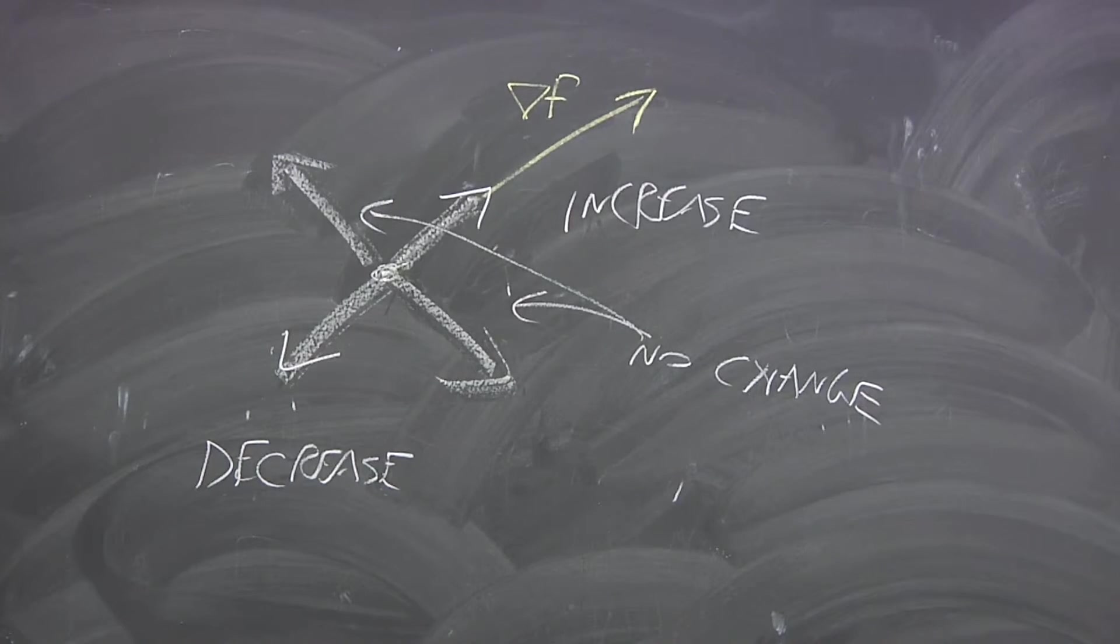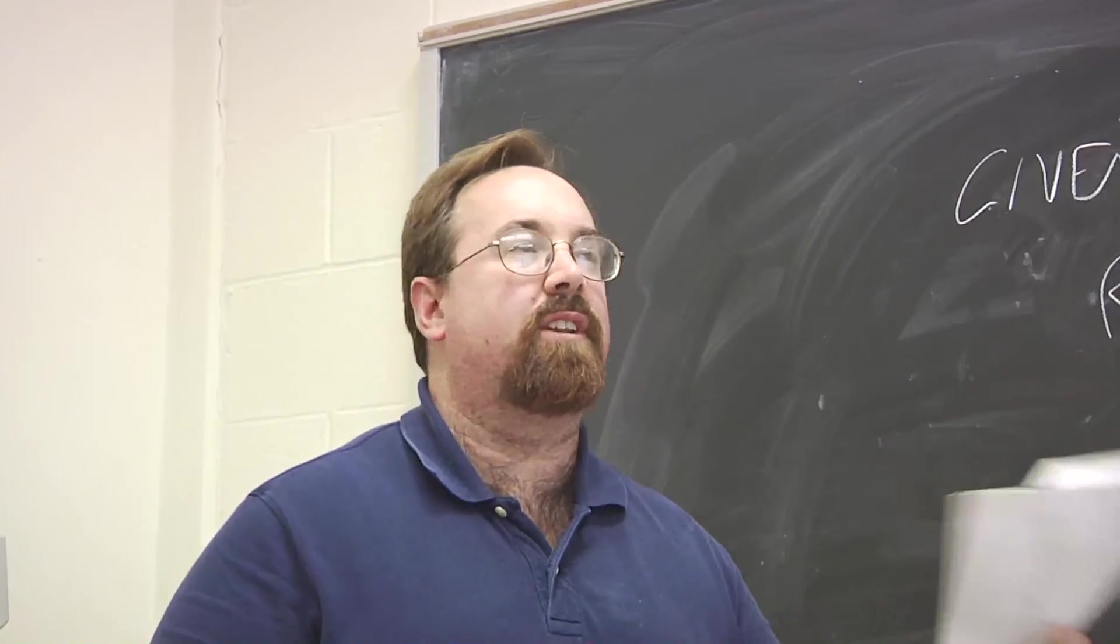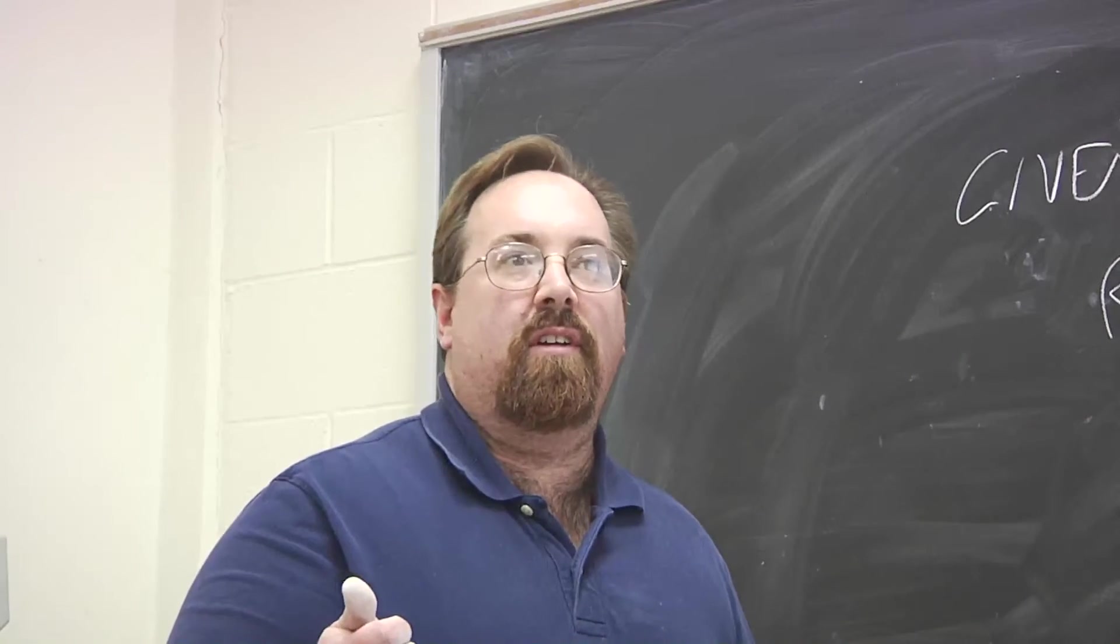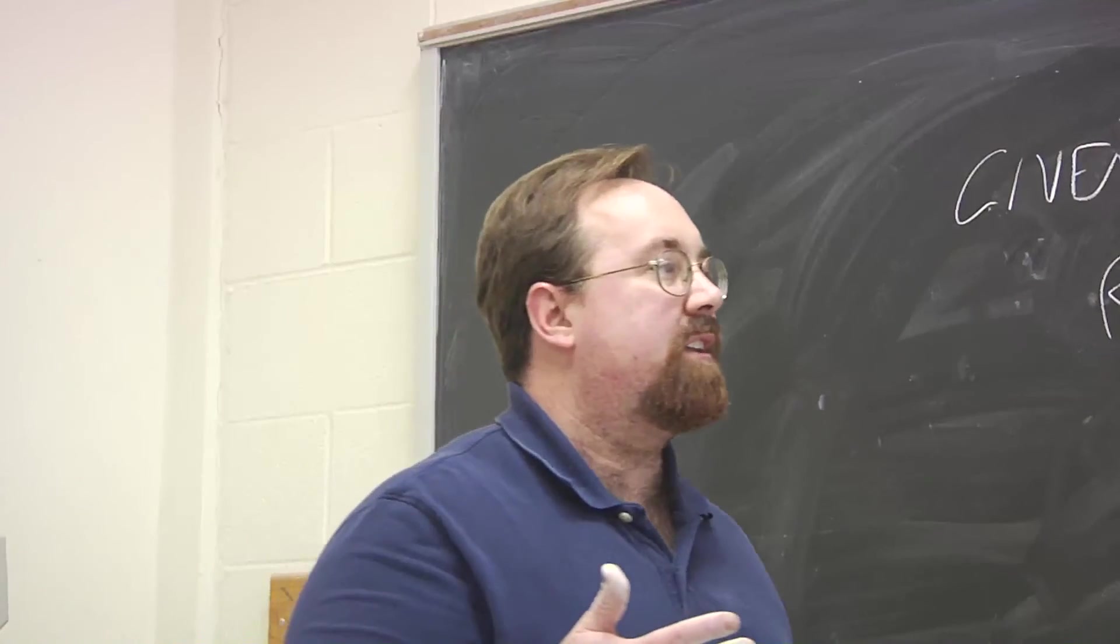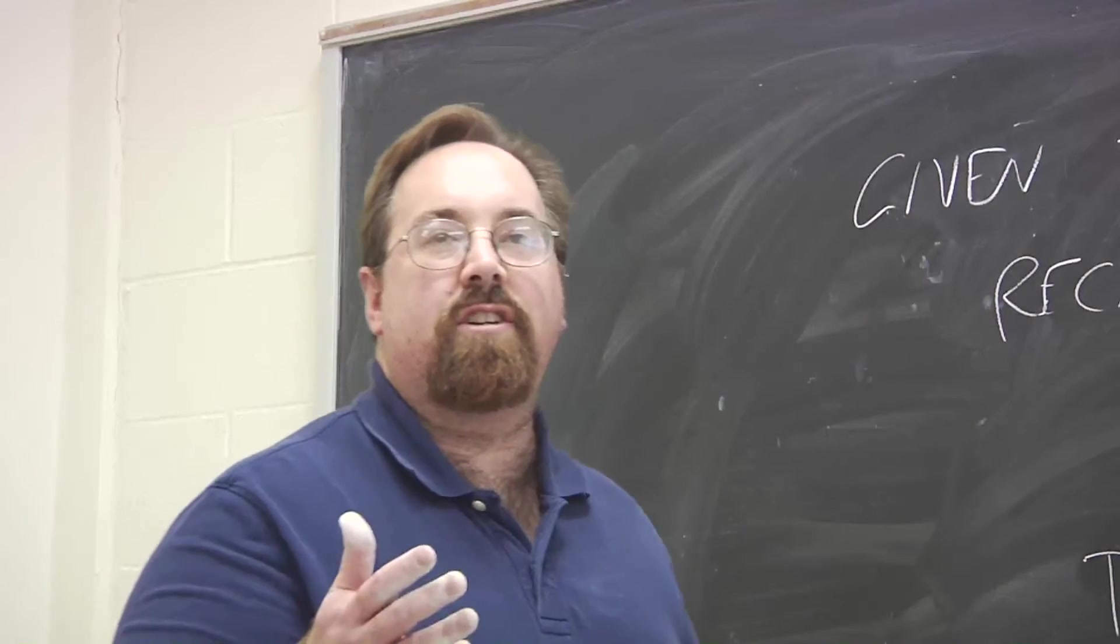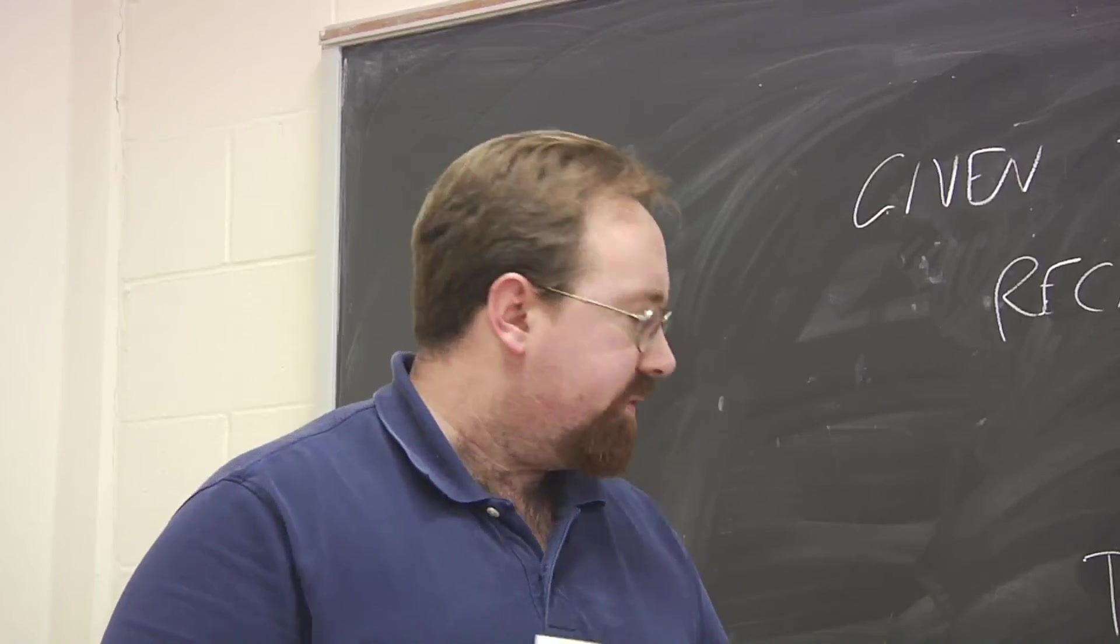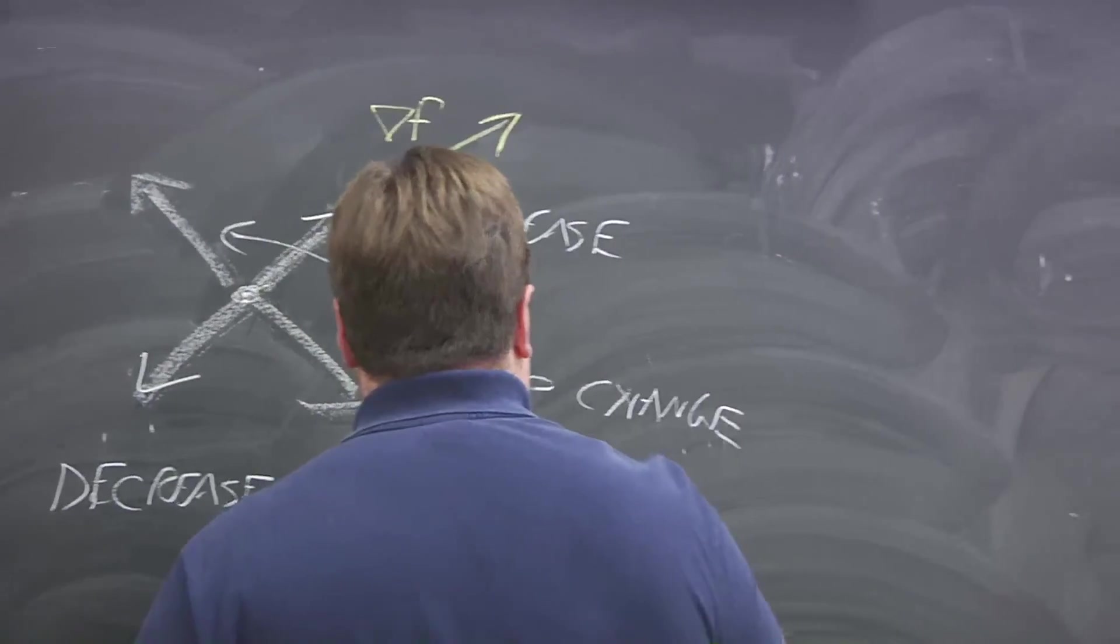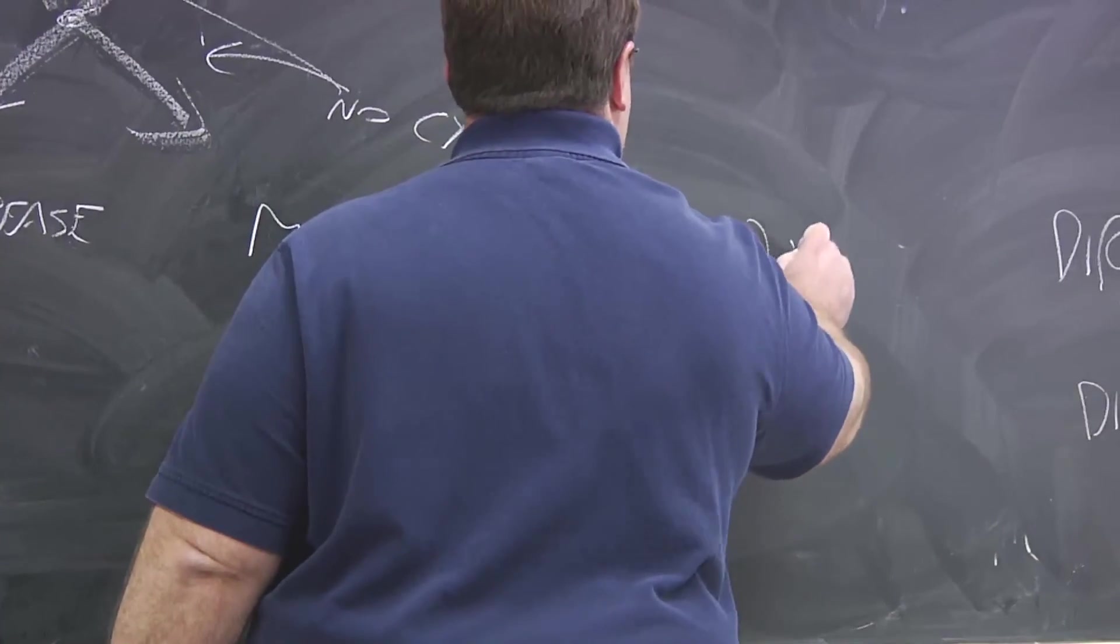Now, steepest descent is a very important concept when it comes to finding where a function of several variables has a minimum. We're going to talk about that more on Thursday, but suppose you have some point, like a starting point, and you're trying to find out where a function is minimum, and you're not at that point yet, you follow the direction of steepest descent. So, you, so what you do is, so you minimize function f of x, y.